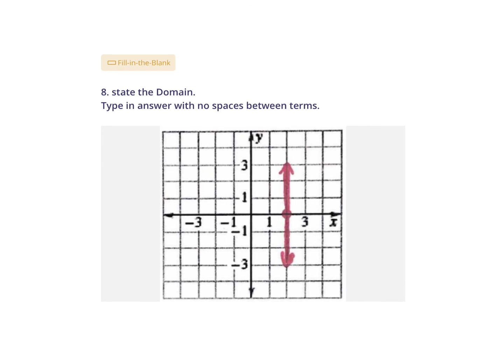State the domain. The domain are your x-values — left and right. This graph doesn't exist anywhere in the negatives or positives, not even here. The only place it exists is at x = 2. That's the actual equation, x = 2. So the domain — type in x equals 2. That's the only place this vertical line exists.